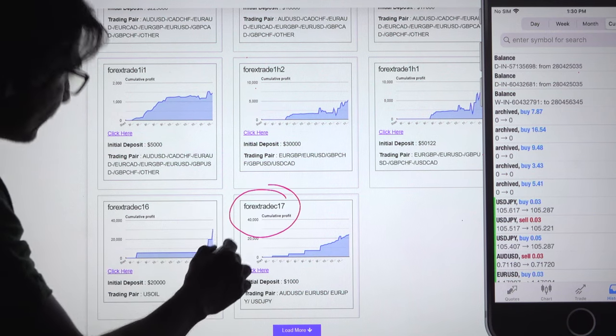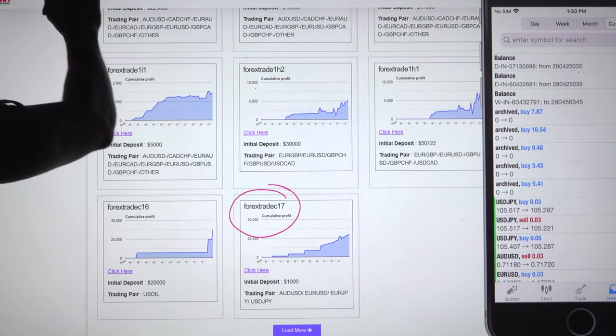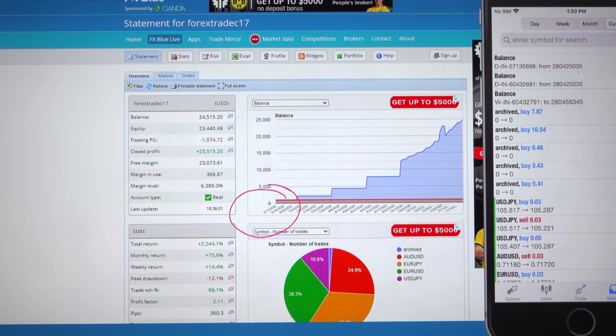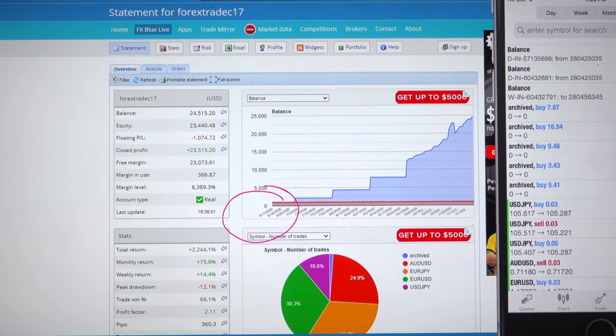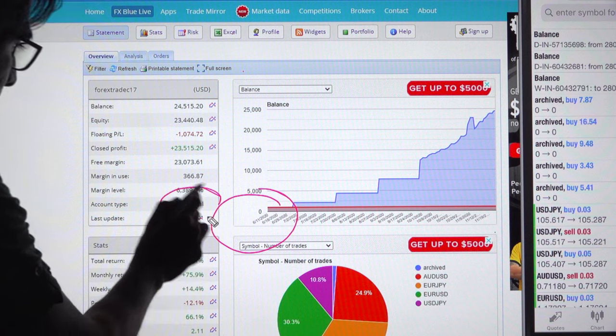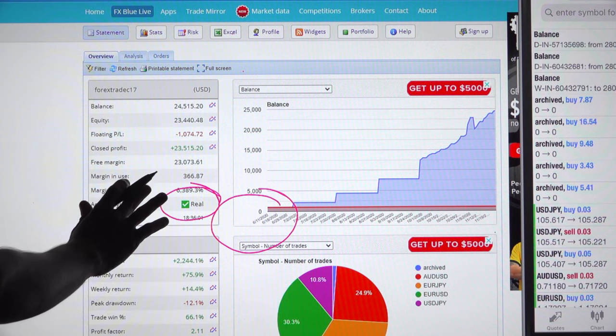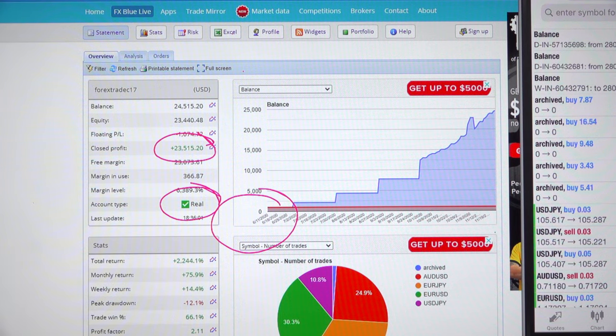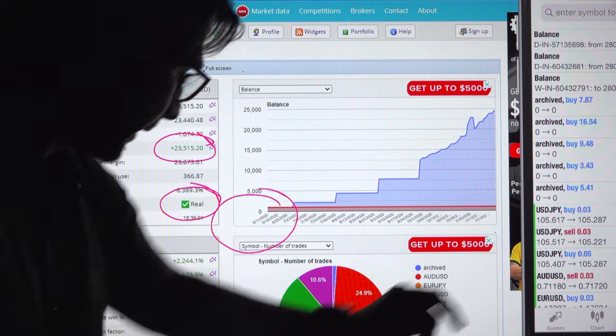Once you click in this FX Trade 17, where in the portfolio there are many accounts connected, once you click here it will redirect you to this page. This is the real account, the confirmation, and the same profit, closed profit 23,515. We will see the closed profit as well.